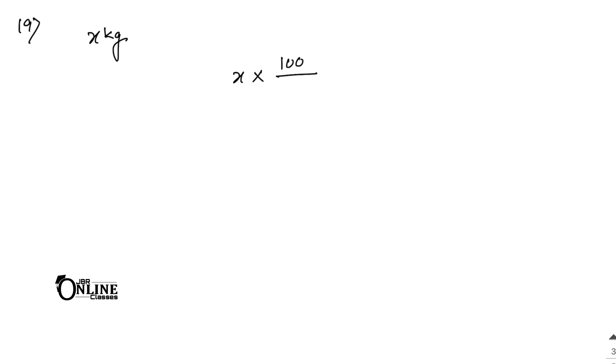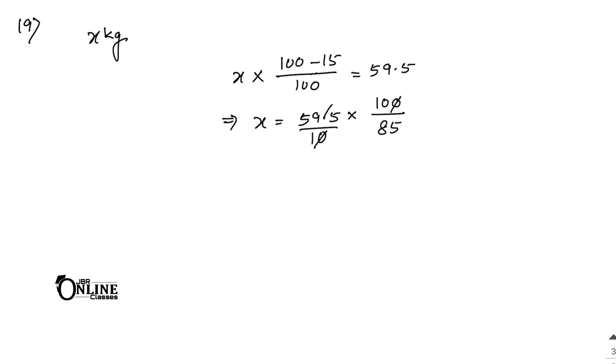Sum number 19: Prathiva reduced her weight by 15 percent. If her weight is now 59.5 kg, what was her earlier weight? Let her earlier weight be x kg. So x into (100 minus 15) by 100 equals 59.5. Therefore x equals 59.5 into 100 by 85. The zeros cancel, giving 595 divided by 85 equals 7, and x equals 7 into 10 equals 70 kg.